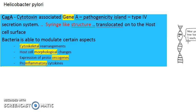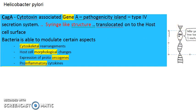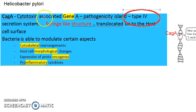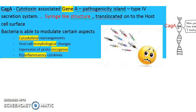The second point is the pathogenicity island in the genetic material of the bacteria. This pathogenicity island carries a gene called CagA — cytotoxin-associated gene A. This gene encodes for a Type 4 secretion system, which makes syringe-like structures that prick the host cell, allowing the bacteria to modulate certain aspects of the host cell.